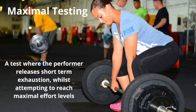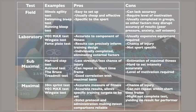Some more information: field tests — examples include the Illinois agility test, swimming bleep test, and running bleep test. The pros of a field test: easy to set up, usually cheap, effective, and specific to the sport. Cons: can lack accuracy, can require a level of motivation that might not be there, and usually completed in groups so other factors may disrupt accuracy — things like peer pressure, anxiety, and self-esteem.